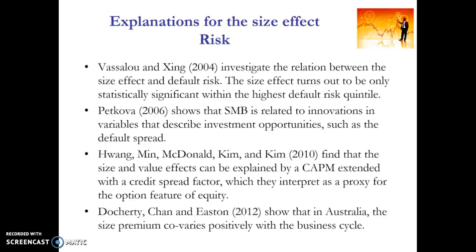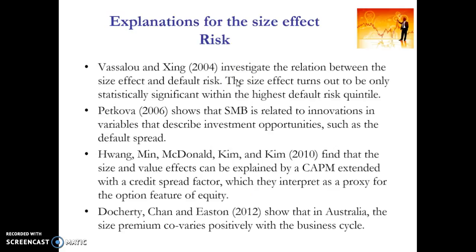Similarly, there's been a whole raft of studies showing that the size premium, or the SMB factor — SMB being an abbreviation for small minus big — tends to vary pro-cyclically with the business cycle. That is, small firms tend to do well when the economy is doing reasonably well, and tend to do poorly when the economy is not doing so well. That pro-cyclical variation with the business cycle is indicative of the fact that this may be some compensation for some sort of economic risk.